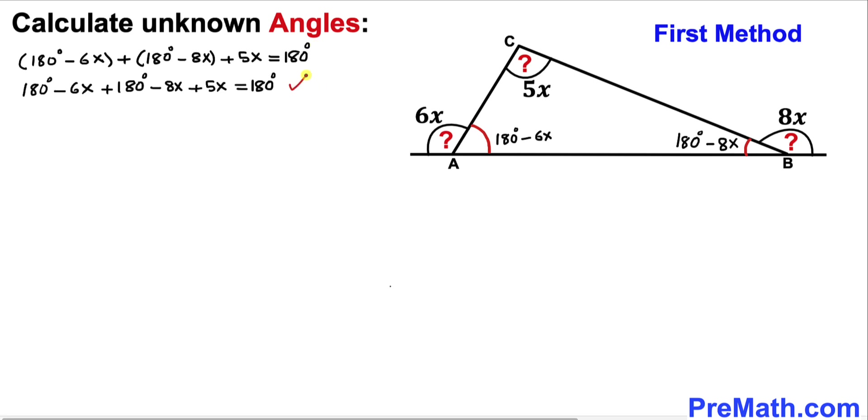And in this next step we have removed these parentheses. And now we can see this 180 degrees and this 180 degrees they are gone. So let's go ahead and combine the like terms.